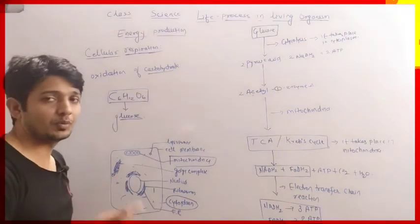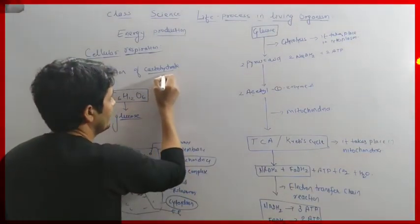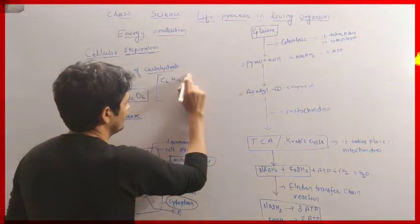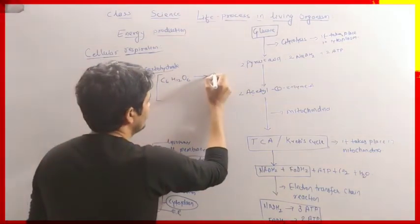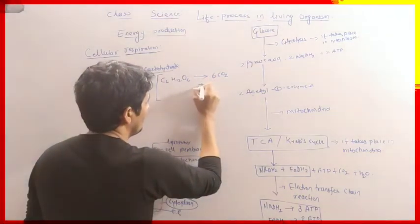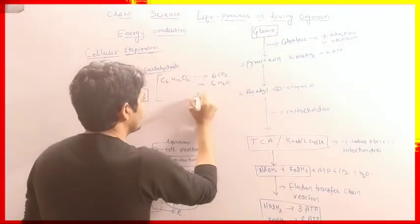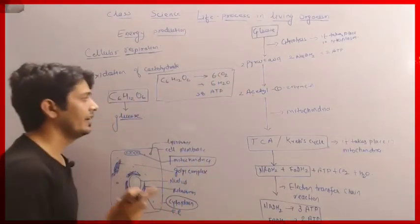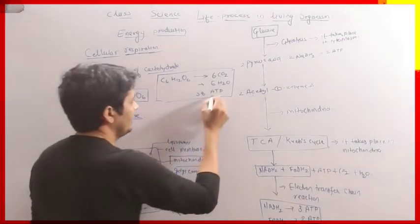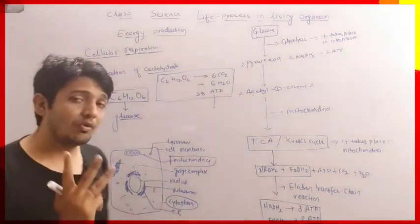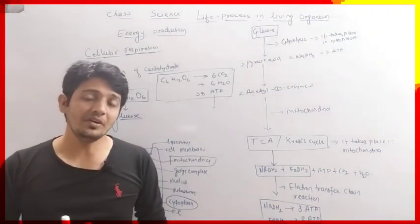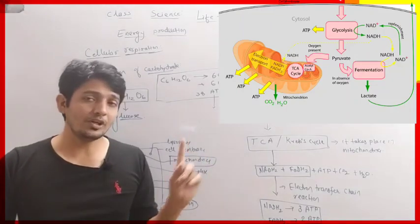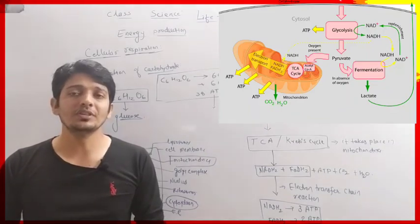We have to write the reaction for this process. Glucose — C6H12O6 — when completely oxidized gives 6 molecules of carbon dioxide plus 6 molecules of H2O and 38 ATP molecules. So 38 ATP molecules are released. In adenosine triphosphate, 3 phosphate bonds are present, and when a phosphate bond breaks down, energy is released. Mitochondria plays a very important role in the production of ATP molecules — that is why mitochondria is called the powerhouse of the cell.